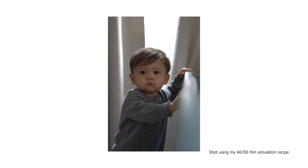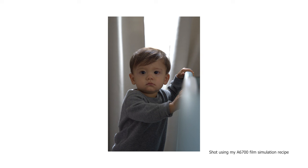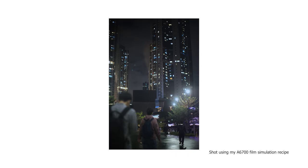Film simulation is basically a baked-in picture profile or color style applied to the image. Some professional photographers like to shoot in raw because it gives us the ability to change the white balance, recover shadows, or possibly even highlights if they're not too blown out. But film simulation gives you a set look straight out of camera without having to shoot in raw.